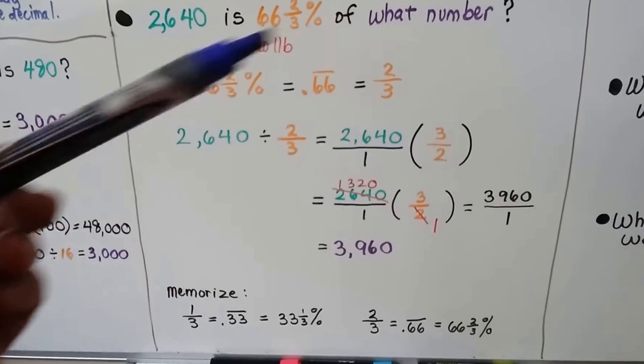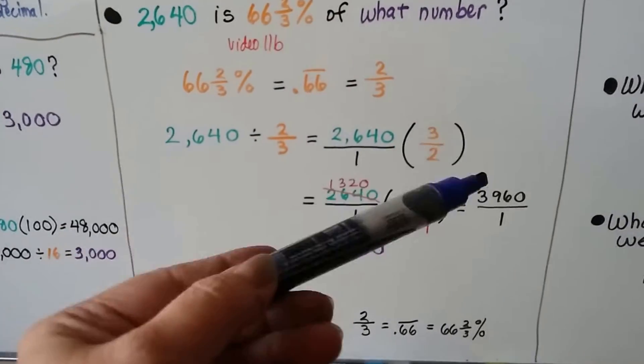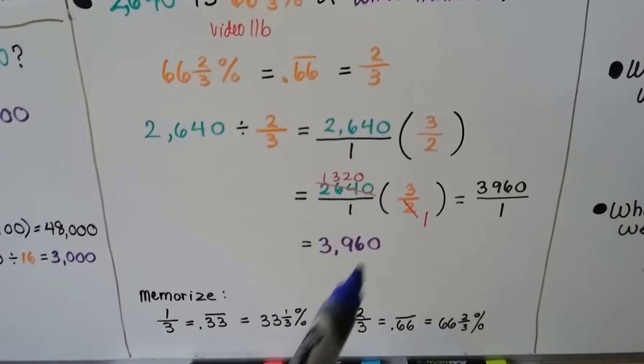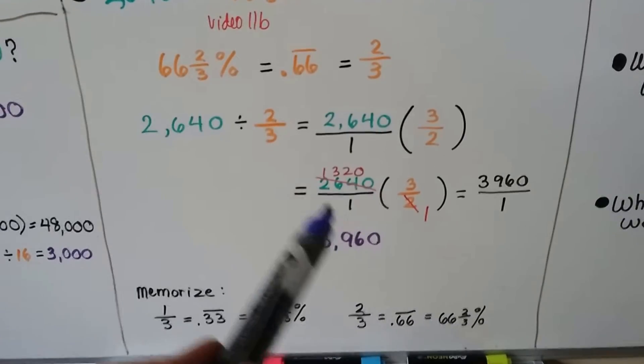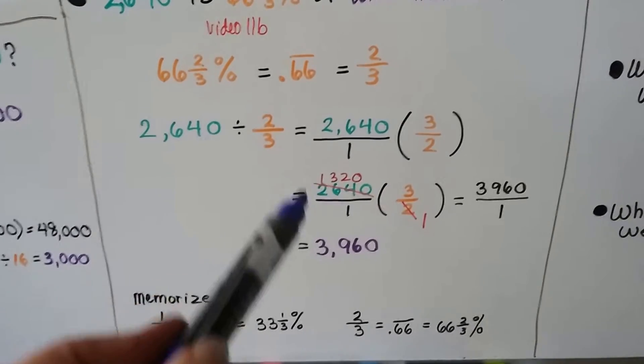Now, we can either multiply straight across, 2,640 times 3, 1 times 2 is 2, and then have to reduce that. Or we could cross-cancel. We can say there's a 2 here and there's 1,320 twos up here.